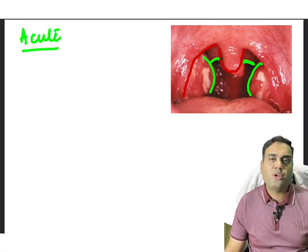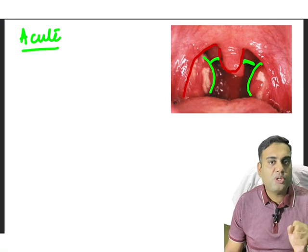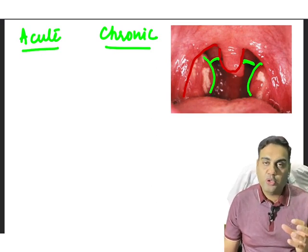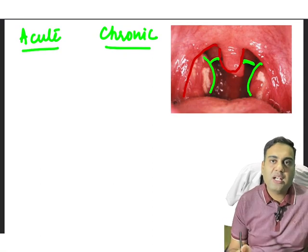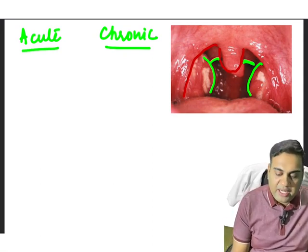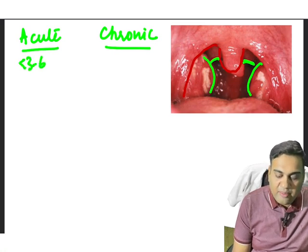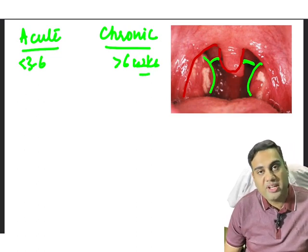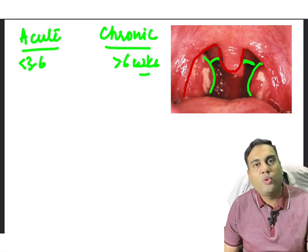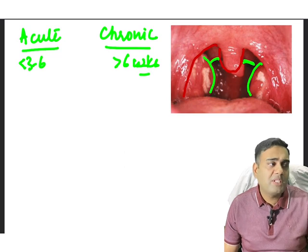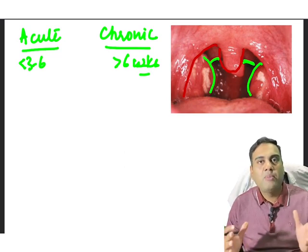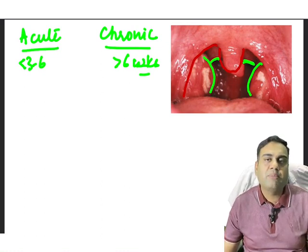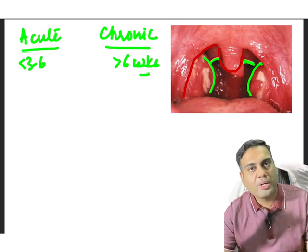Acute tonsillitis and chronic tonsillitis are two very important concepts. What are the differences and how do they present? Clinically, something happening in less than three to six weeks is acute; something happening for more than six weeks is chronic. If you have infection within three to six weeks, that is acute; a long-standing condition is considered chronic tonsillitis.